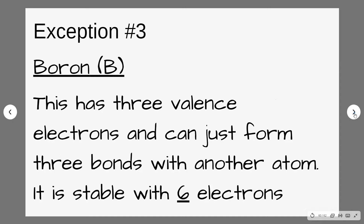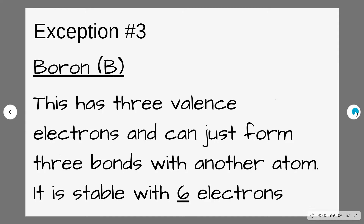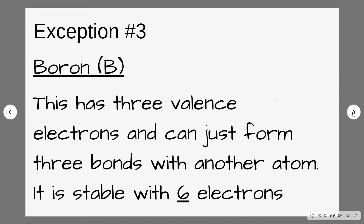Finally, we've got boron. Boron is in group 3 and has three valence electrons. This means it can form just three bonds with other atoms and be stable with six electrons — three of its own and three shared from other atoms. So when you are counting up the valence electrons around boron, you're looking for six.